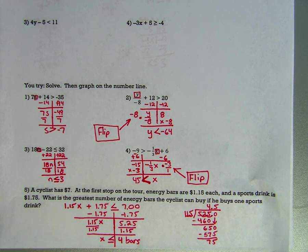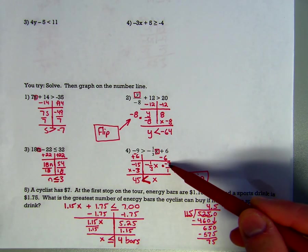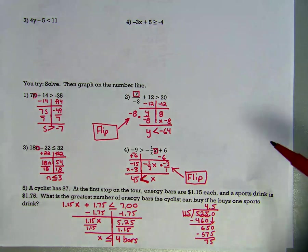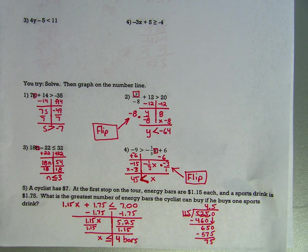Number 4: negative 9 is greater than negative one-third x plus 6. Subtract 6 on both sides, ending up with negative 15 equals negative one-third x. Instead of dividing by negative one-third, multiply by the reciprocal, which is negative 3. Since we're multiplying by a negative, flip the inequality. Multiplying both sides by negative 3 gives 45, so x is greater than 45 — or equivalently, 45 is less than x, meaning anything above 45 satisfies x.